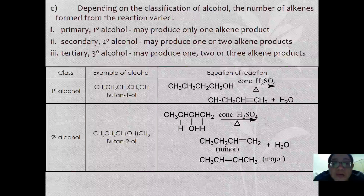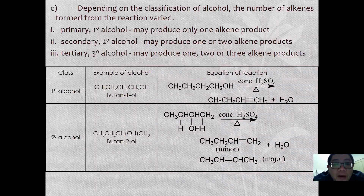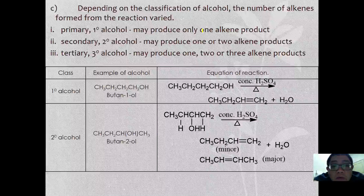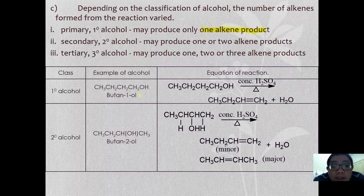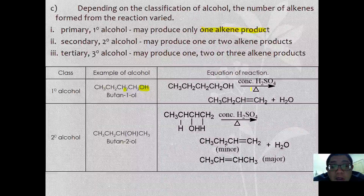Depending on the classification of alcohol, the number of alkene products formed varies. For a primary alcohol, it usually yields only one alkene product. For example, if you have butan-1-ol, one OH and one H is removed. It will dehydrate with concentrated sulfuric acid and you will form but-1-ene.